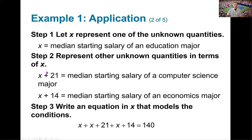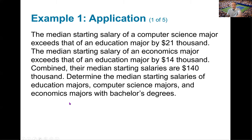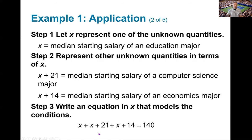Now the other quantities in the problem become really easy. I know it said the computer science major makes 21,000 more. X is measured in thousands in this problem. So I can say x + 21 is going to equal the median starting salary of a computer science major. And then the economics majors made 14,000 more. So x + 14 would represent that. Now we also know in the problem that it said that combined their median starting salaries are 140,000. That's where I got this equation from right here. So x is representing the education major. x + 21 is representing the computer science major. x + 14 is representing the economics major. The sum of their starting salaries would equal 140,000.